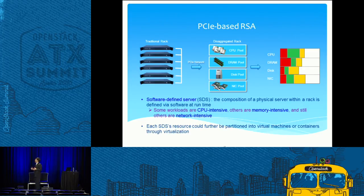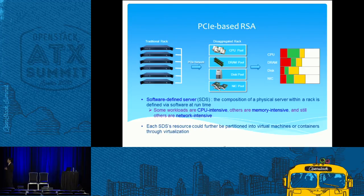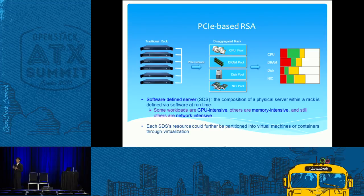We have a lot of traditional hosts, each with its own CPU, memory, and disk. But in the PCIe-based rack-scale architecture, we disaggregate the rack into a CPU pool, DRAM pool, disk pool, and NIC pool. Then we can dynamically create the so-called software-defined server. That server can be composed in different configurations — for example, you can make it suitable for CPU-intensive, memory-intensive, or network-intensive workloads. Because of this architecture, we can make the server easily configured at very high density.